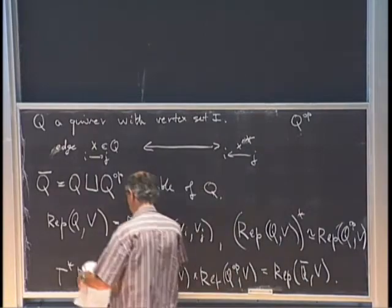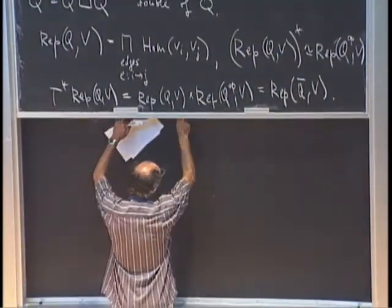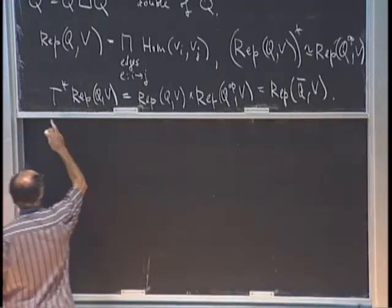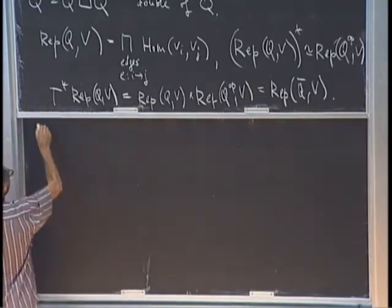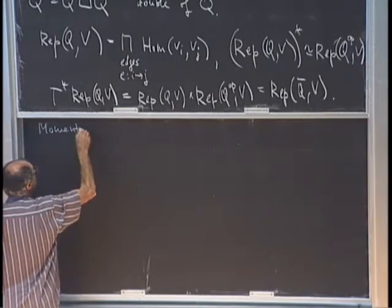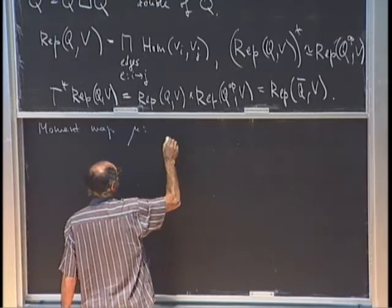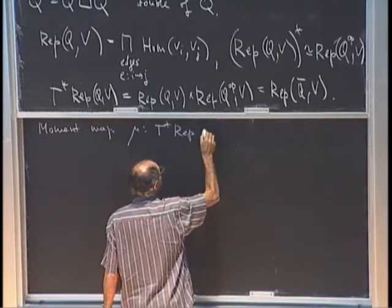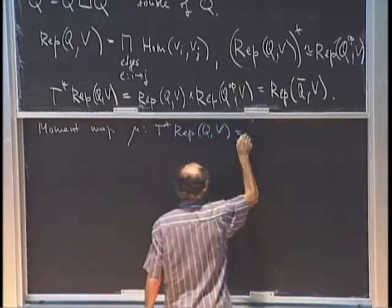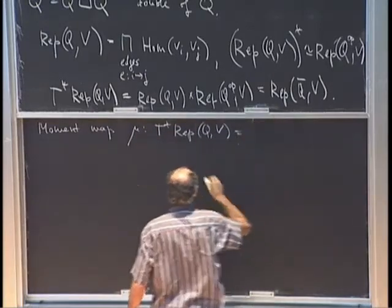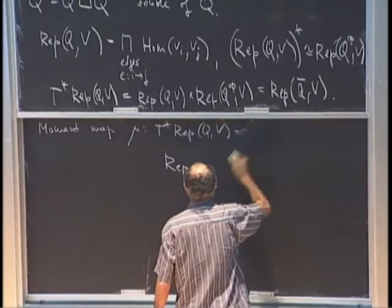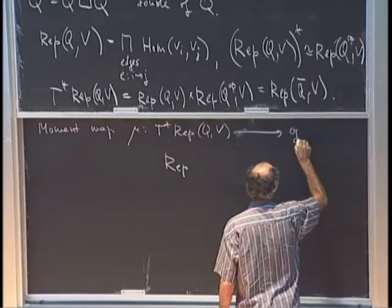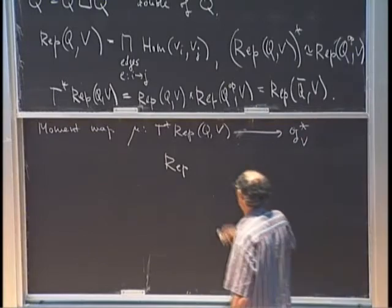Now we have to study the moment map with respect to our setting. The group G_V acts on everything in the obvious way. The moment map mu goes from T* Rep(Q,V), which equals Rep(Q-bar, V), to the dual of the Lie algebra. We identify the left-hand side with Rep(Q-bar, V), and the Lie algebra dual with the Lie algebra itself using the trace.